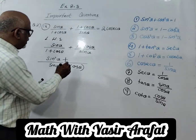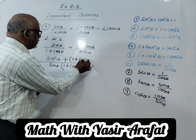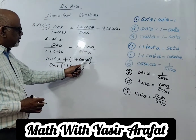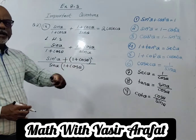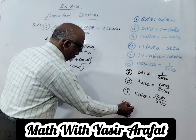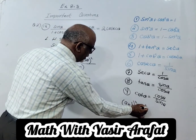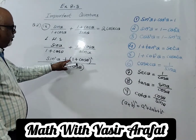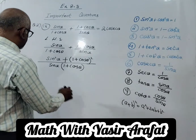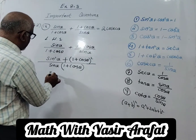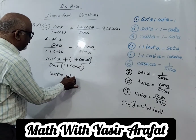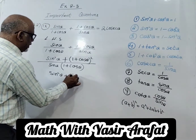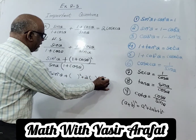Taking the LCM, which is sin θ into (1 + cos θ). Multiplying by 1 + cos θ gives (1 + cos θ)² in the numerator. We have to expand this using the formula a + b whole square equals a² + 2ab + b². So we apply this formula to (1 + cos θ)², where a = 1 and b = cos θ, giving a² + 2ab + b².